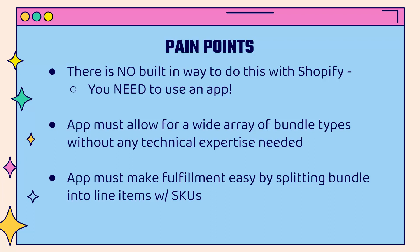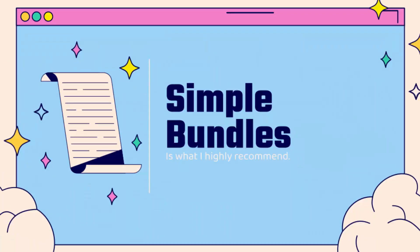Another important thing: the app must make fulfillment easy by splitting the bundle into line items. We don't want to create new products and mess up our fulfillment. This is especially important for automated fulfillment with print on demand, drop shipping, or fulfillment companies. That's the reason why I use Simple Bundles — I'm going to show you in this video, I highly recommend it. It's really going to give you the ability to not only create highly flexible bundles, but also to make fulfillment super easy.